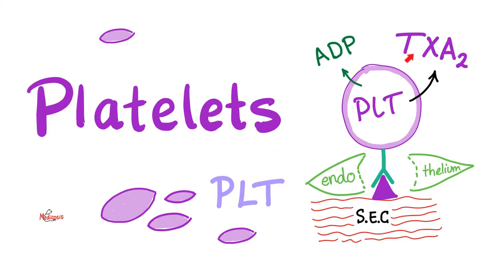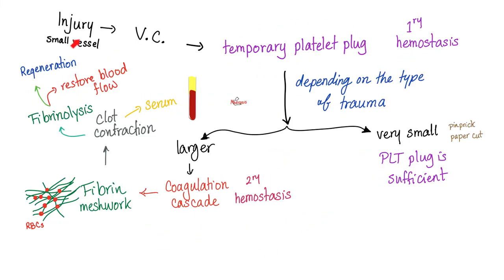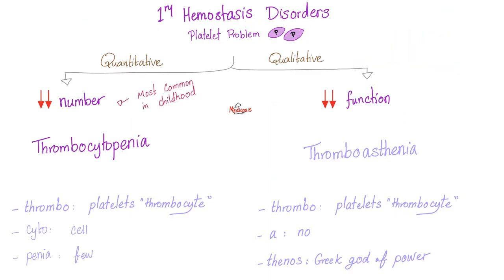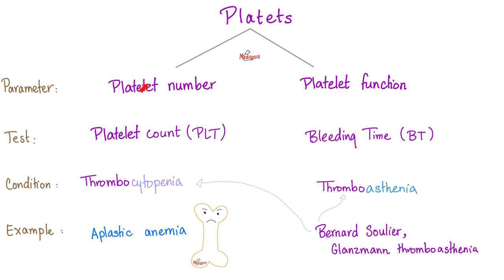The normal function of platelets is to make a platelet plug and stop bleeding — this is called primary hemostasis. The hero of primary hemostasis is platelets. This is followed by secondary hemostasis, where the heroes are coagulation factors. Primary hemostasis disorders can be quantitative (problems in platelet number, called thrombocytopenia) or qualitative (problems in platelet function, called thrombosthenia). Thrombocytopenia gives an abnormal platelet count; thrombosthenia gives an abnormal bleeding time.